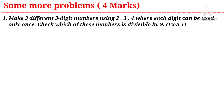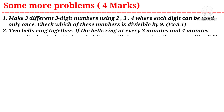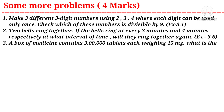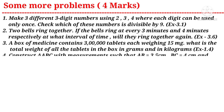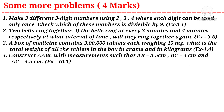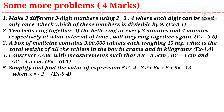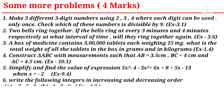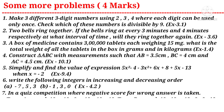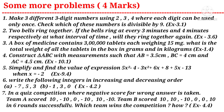Question one: make three different three-digit numbers using 2, 3, 4 where each digit can be used only once; check which of these numbers is divisible by nine — a question from the third chapter. Question two: two bells ring together; if the bells ring at every three minutes and four minutes respectively, at what interval of time will they ring together again? — a question from the third chapter.